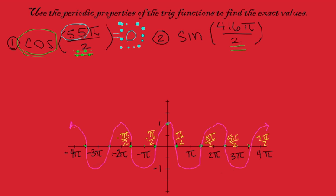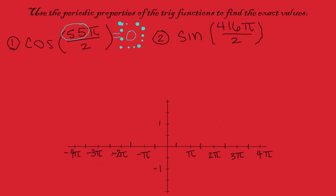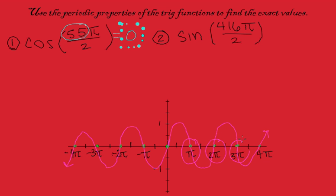Now if we look at the sine function, we know that sine is going to look like this. We have it going through 0 right here at the origin, and again over here at pi, 2 pi, 3 pi, etc. So if we draw that out, we have this — and so on. We know that every time we have a whole number pi, we're passing through 0.